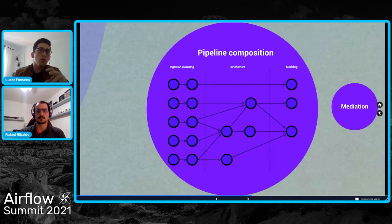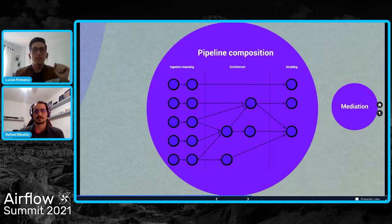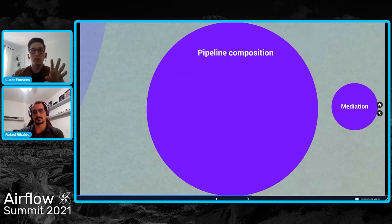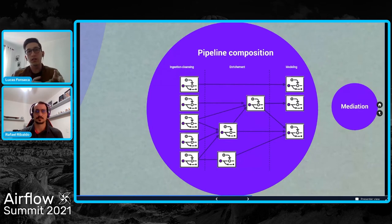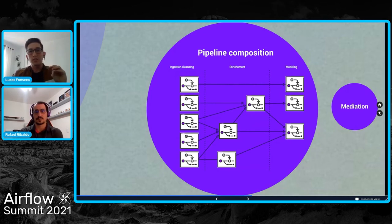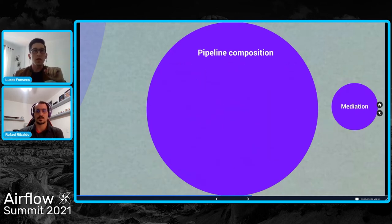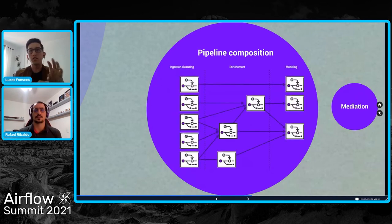We want to explore the maximum of our pipeline parallelism and deliver data at the earliest. Our data lovers — as we call our data stakeholders — love to have fresh data, so we need to run our jobs as synchronously as possible. We divide the processing into specialized DAGs according to the context of the operations and according to the layer to which the DAG operates on data. Each DAG is responsible for a small context processing, and we see those DAGs as fragments of the macro DAG. According to the context, the DAG will be specialized on one of three layers: ingestion/cleansing, enrichment, or modeling.